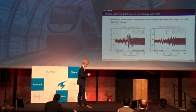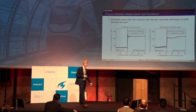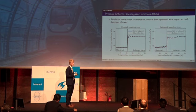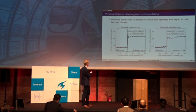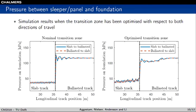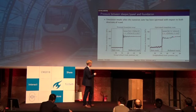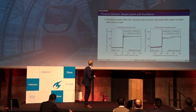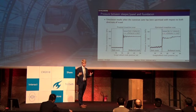A similar figure shows the maximum pressure on the foundation as a function of longitudinal track position. For the nominal track, the first sleeper when going from slab track to ballasted track is exposed to higher pressures. In the optimized transition zone, when we minimize the maximum value, it is actually the pressure far away from the transition zone that constrains the solution. This pressure could be reduced by changing the dimensions of the sleepers, for example, but if nominal sleeper dimensions are reintroduced, the pressure rises again.